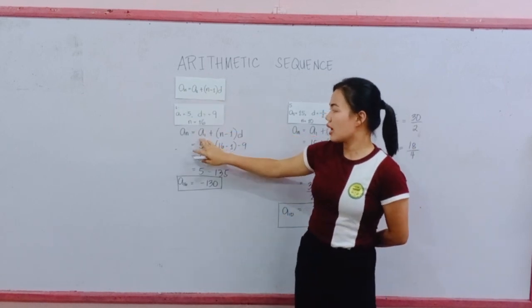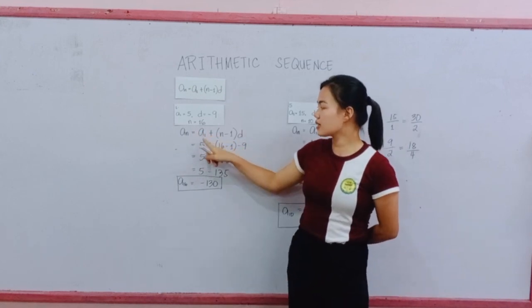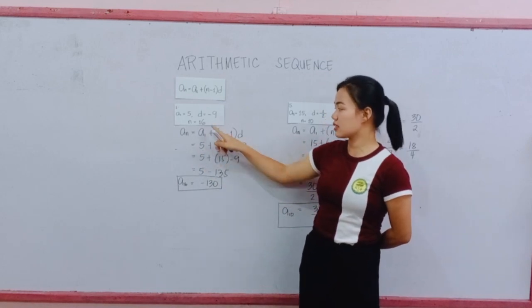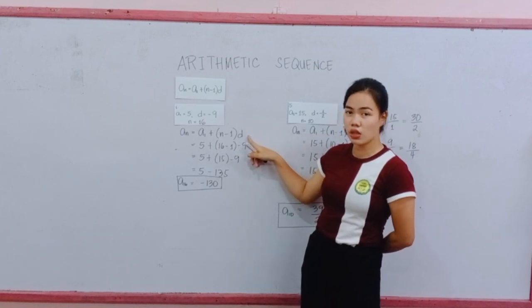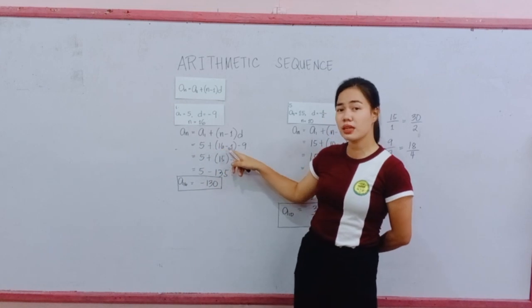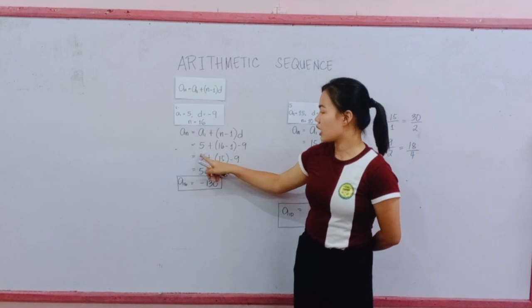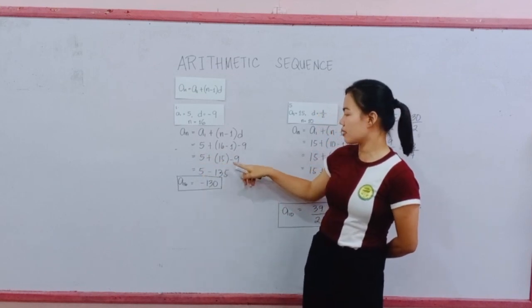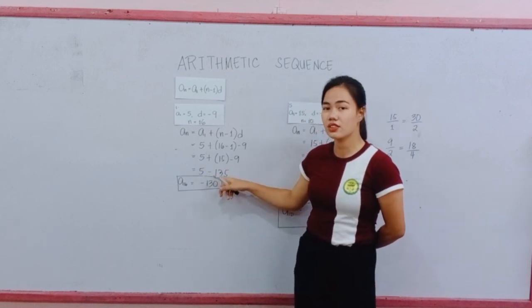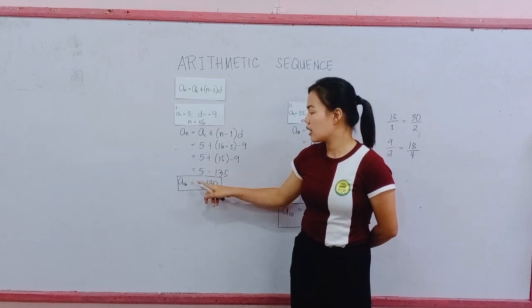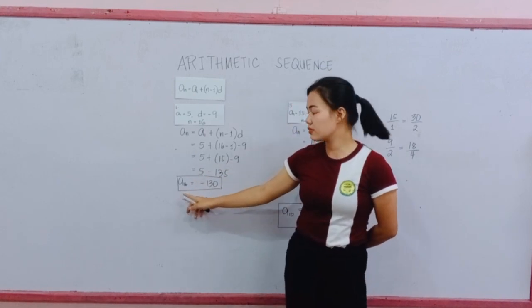Our formula is A sub N equals A sub 1 plus N minus 1 times D. Our A sub 1 is 5. Our N is 16 minus 1 times negative 9. That is our common difference. So 5, 16 minus 1 is 15 negative 9. Copy 5, 15 times negative 9 is negative 135. So 5 minus 135 equals negative 130. So that is our A sub 16.